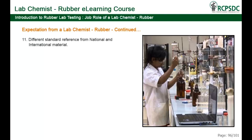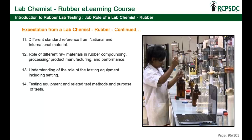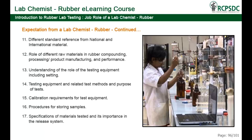Different standard references from national and international material. Role of different raw materials in rubber compounding, processing or product manufacturing, and performance. Understanding of the role of testing equipment including settings, related test methods, and the purpose of tests. Calibration requirements for test equipment. Procedures for storing samples. Specifications of materials tested and their importance in the release system.